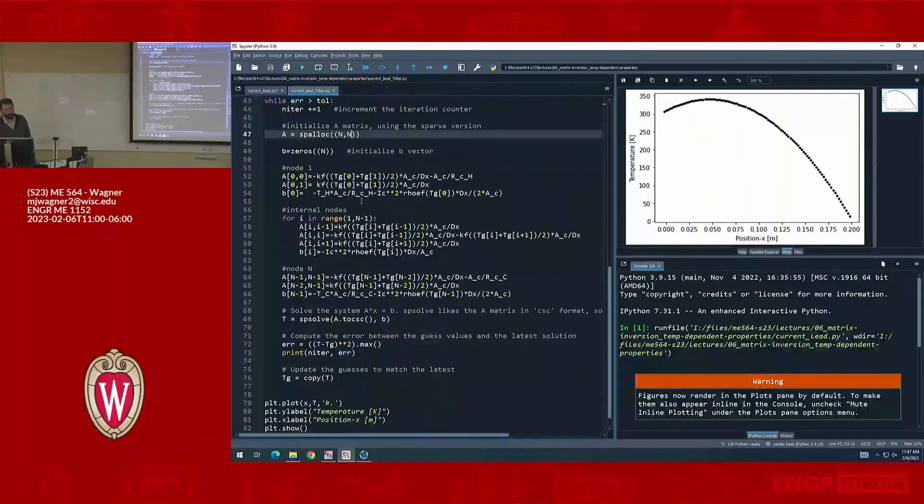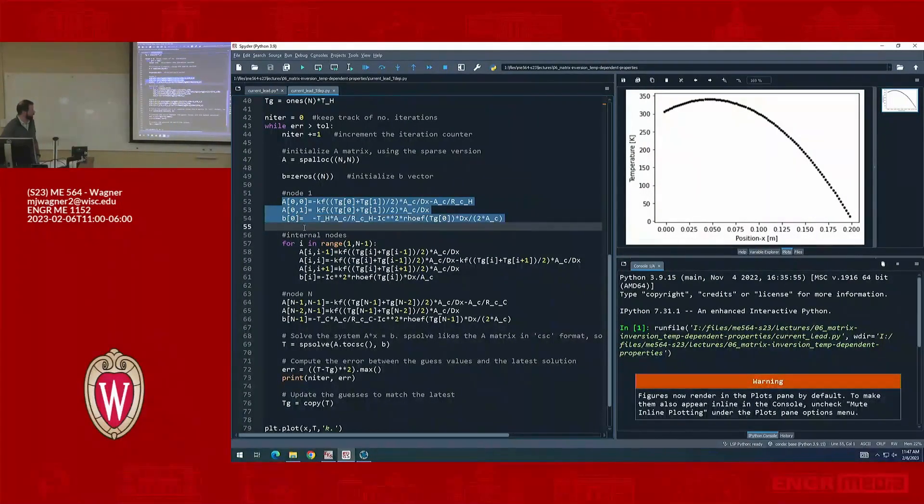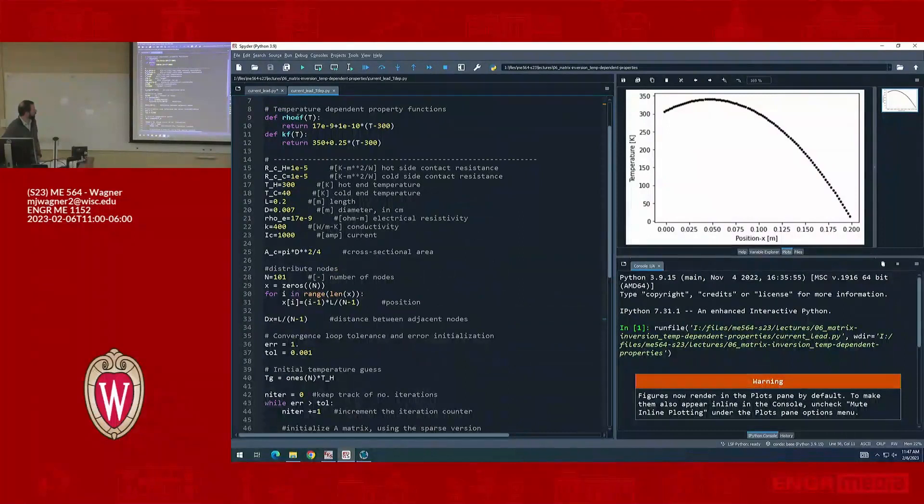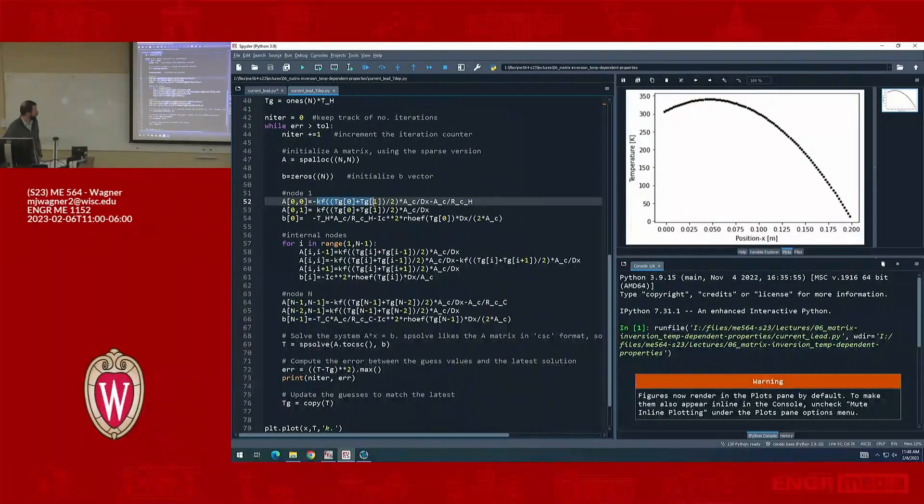All right, so for this example, this is showing how you actually do the temperature-dependent properties. Again, this is for the matrix inversion approach. You can do this the same way for Gauss-Seidel. I will upload that example when I find it. But what you have is now a temperature-dependent resistivity and a temperature-dependent conductivity. You would give those function definitions, give them the expression in terms of temperature, and now you're just passing in your temperature value. So down here, any place where we previously had just a constant k, now I replace that with this evaluation, this k f.